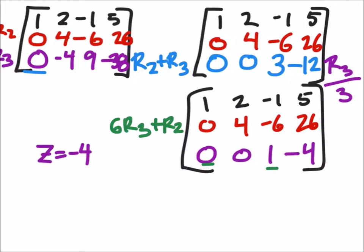So, 6 times this 0 plus 0 is still, well, 0. 6 times 0, 0 plus 4 is 4. This is my middle row, by the way. 6 times 1 is 6, plus negative 6 is 0. That's what we wanted. And 6 times negative 4 is negative 24, plus 26 is 2.